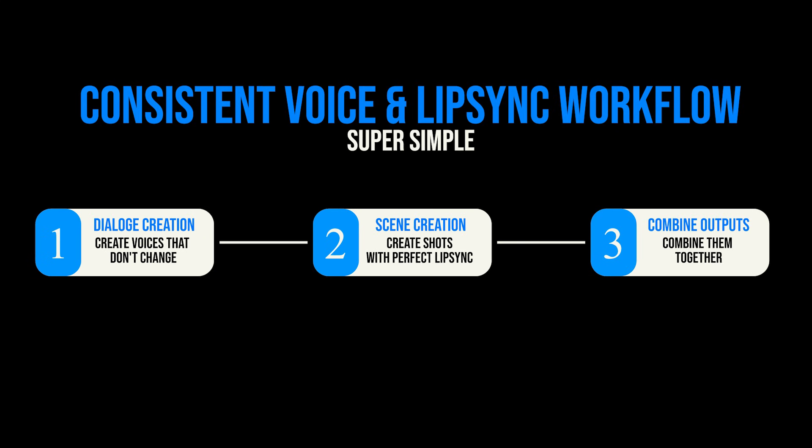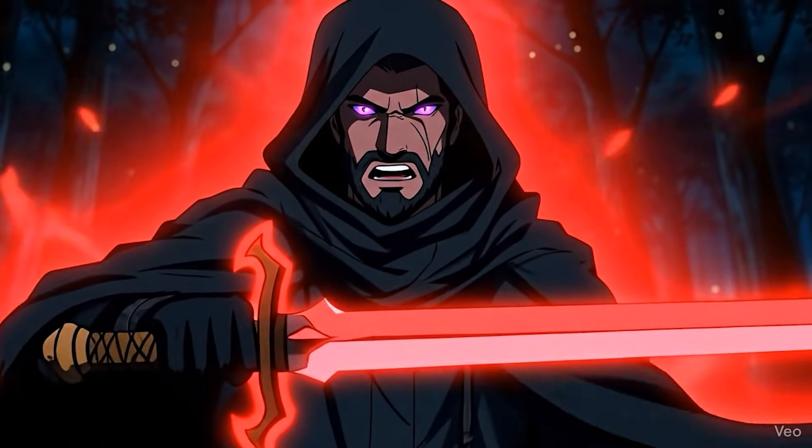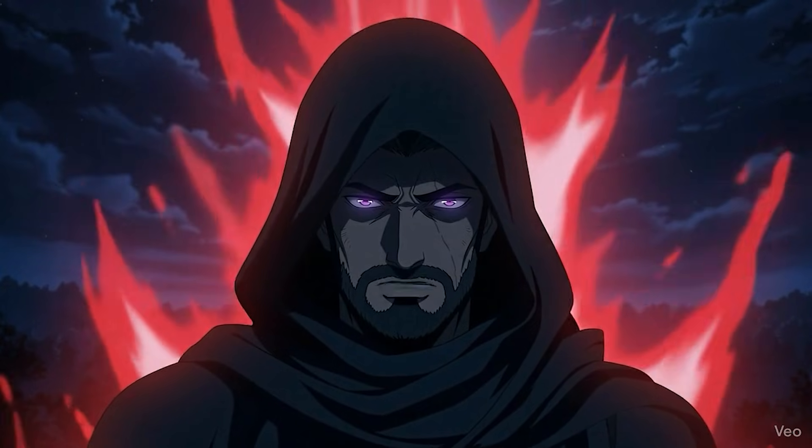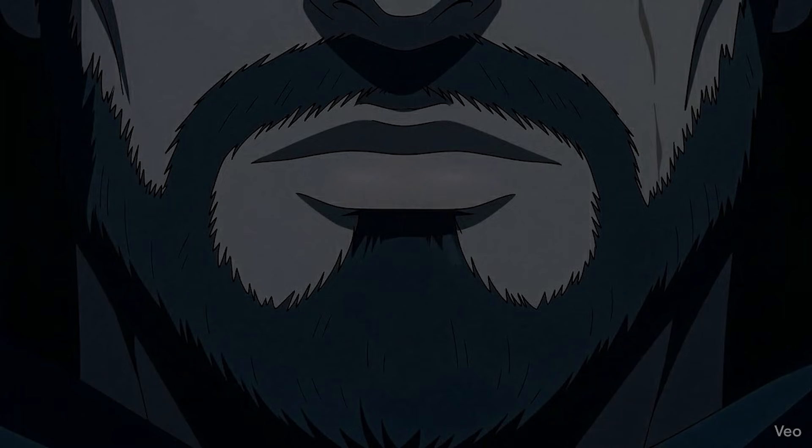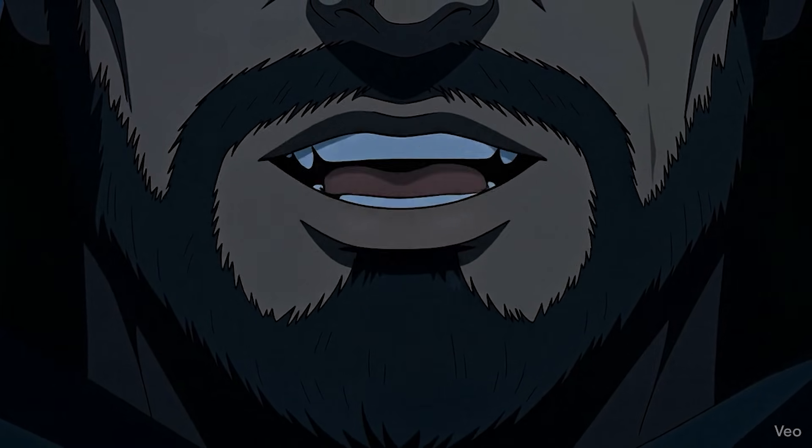Step two is all about creating our scenes. Now that we have our consistent voices, what we need is a video platform that will allow us to insert our lines into prompts so that our characters can be walking, talking, and fighting, while also saying the lines we put in the prompt that we can then match to our ElevenLabs output. There are two platforms that I think do this better than others — that's VO3 and Kling. We're going to look at what it looks like in VO3 today, but any platform will work given that it can accept dialogue in the prompts.